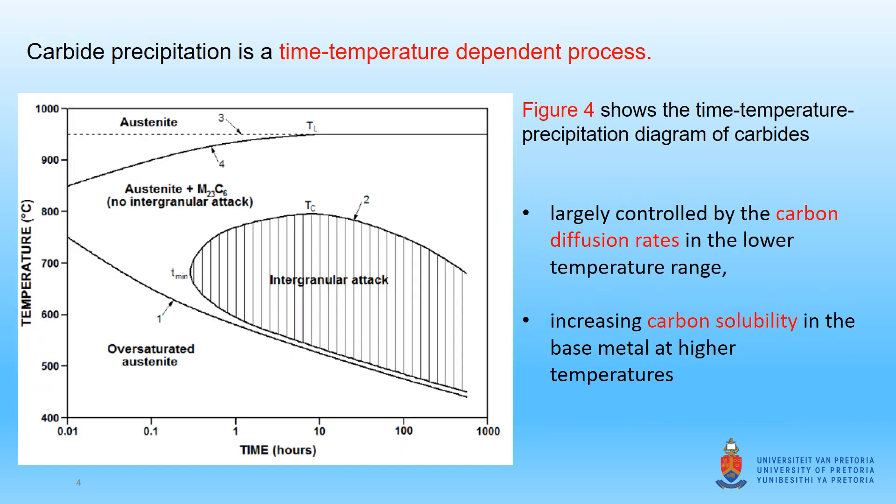Figure 4 shows the time-temperature precipitation diagram of carbides in 304 stainless steel during heat treatment after it has been solution annealed and quenched. Carbide precipitation is a time-temperature dependent process. At low temperatures, you have low solubility, which means high excess carbon is available due to the oversaturated matrix, but the diffusion rate of carbon is low. So at temperatures around 500°C, carbide precipitation will occur but only after a very long time, as seen in curve 1.